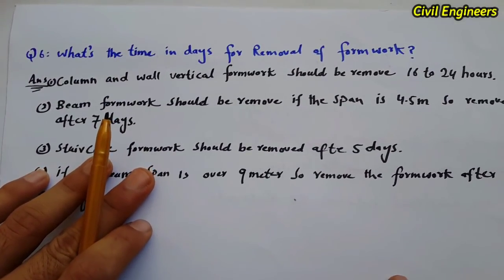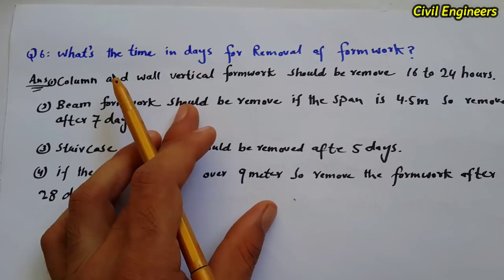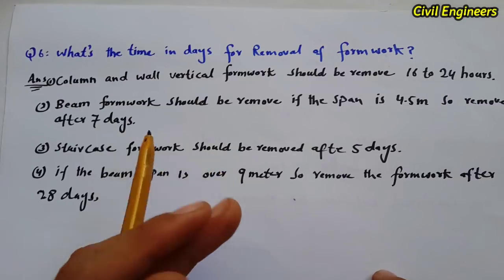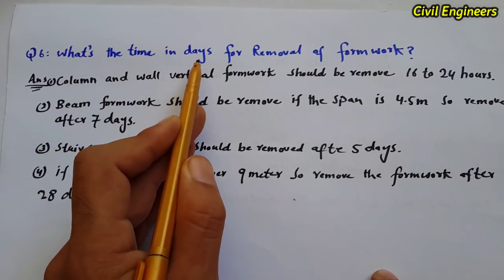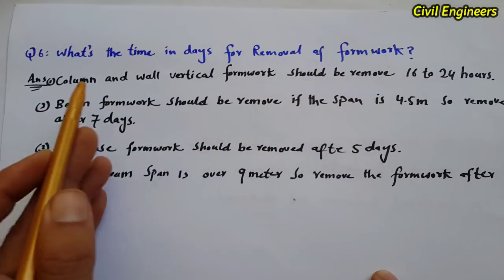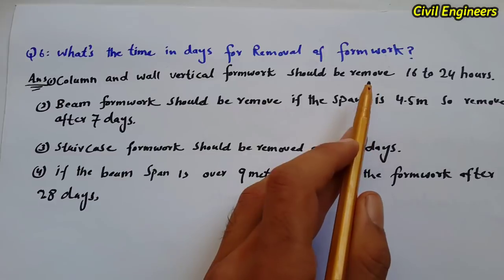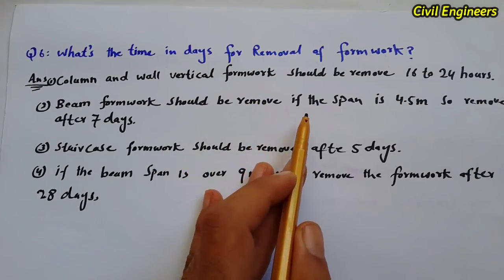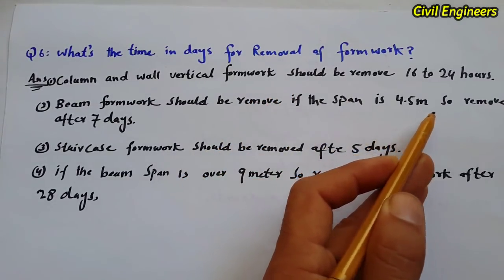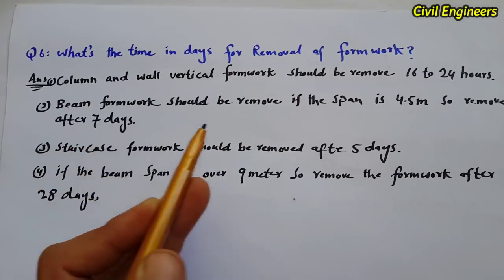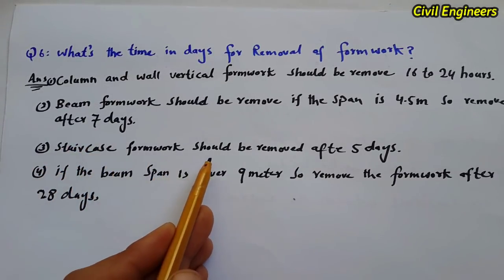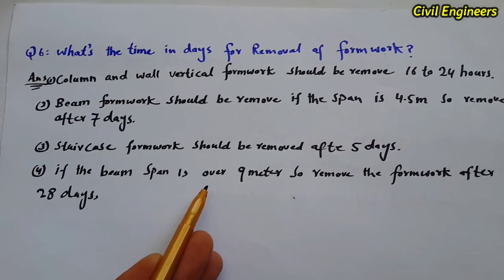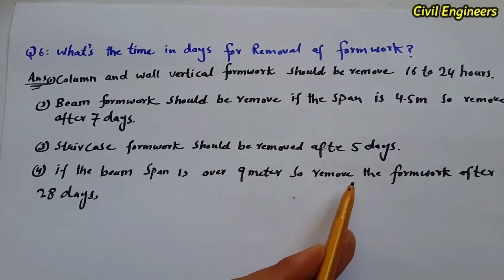These are very important interview questions that are frequently asked. Question six: what is the time in days for removal of formwork? First, column and wall vertical formwork should be removed after 16 to 24 hours. Second, beam formwork should be removed — if the span is over 4.5 meters, remove after seven days. Third, staircase formwork should be removed after five days. If the beam span is over 9 meters, remove the formwork after 28 days.